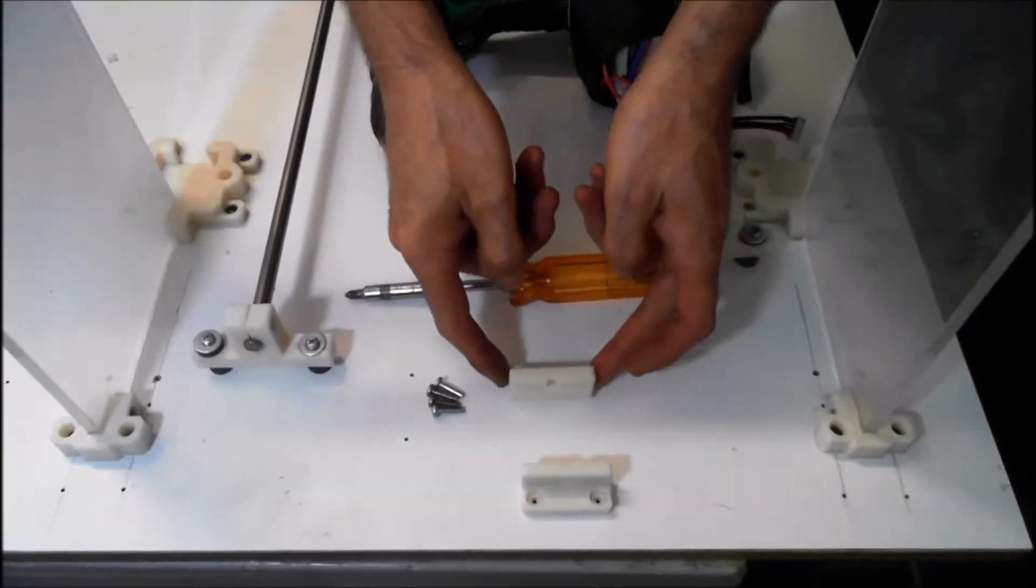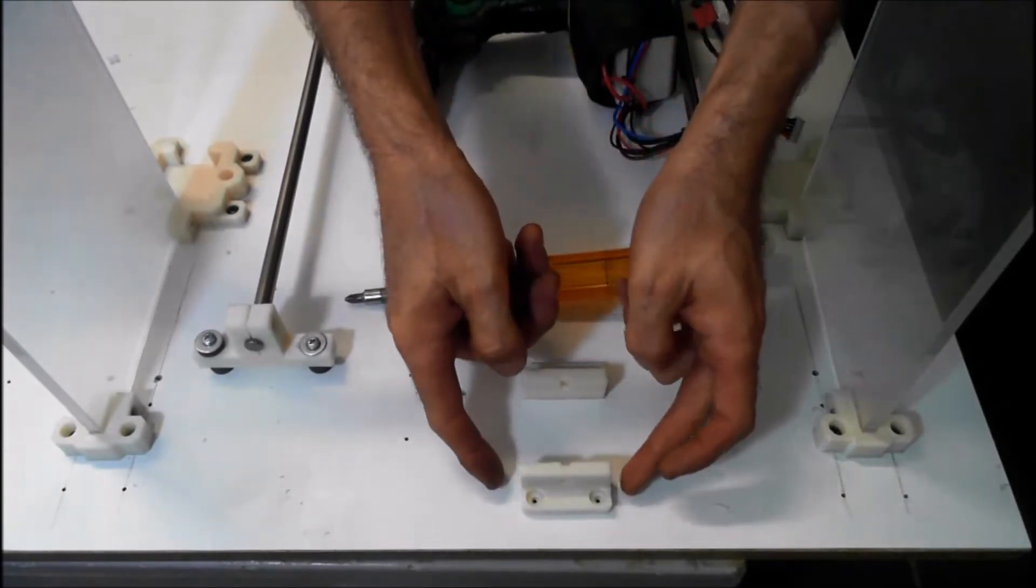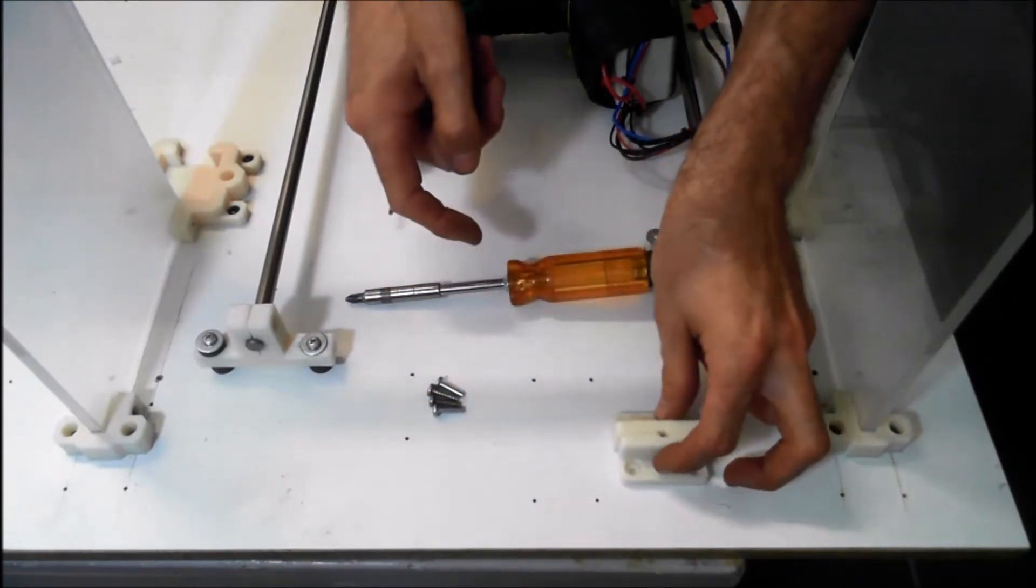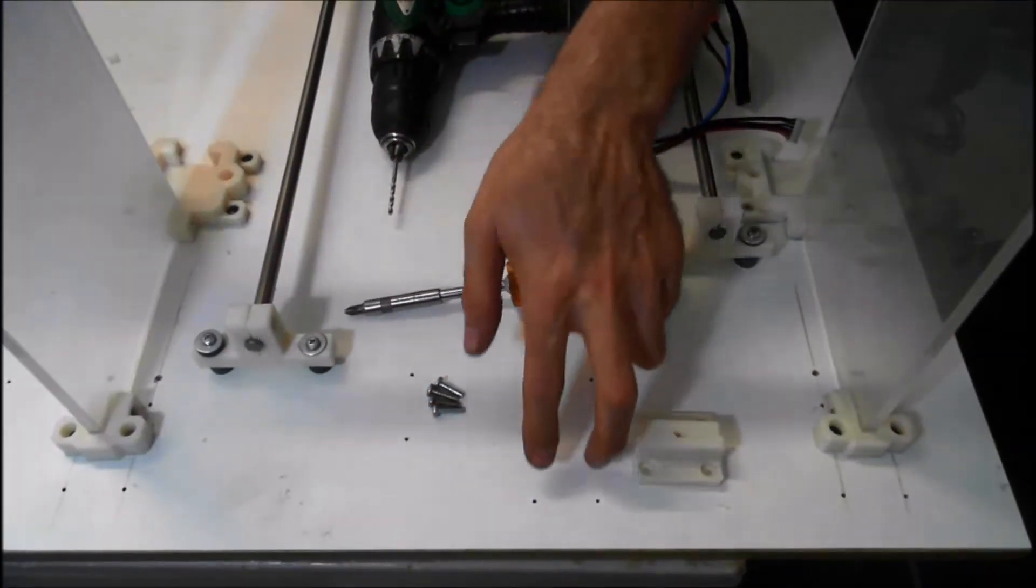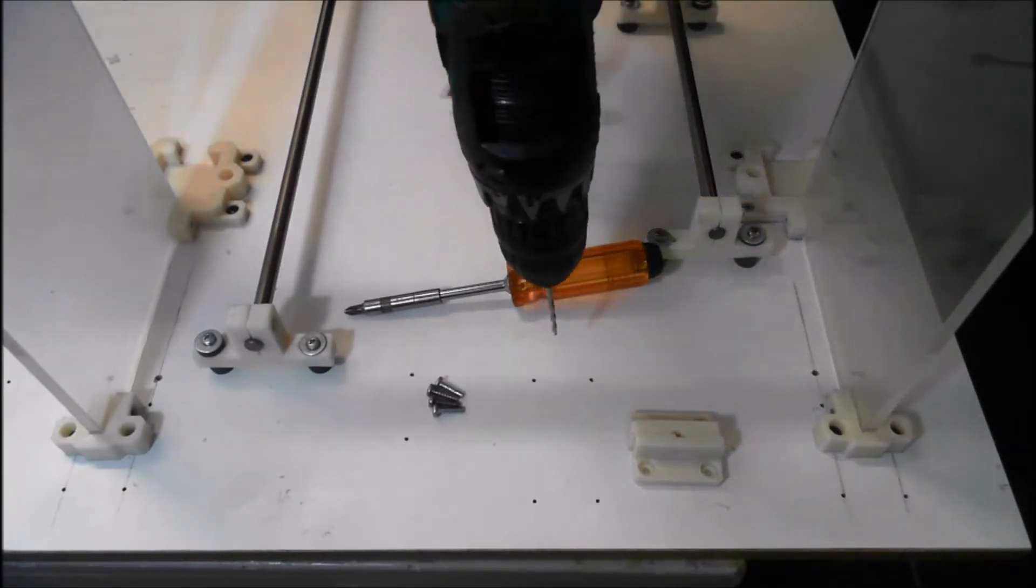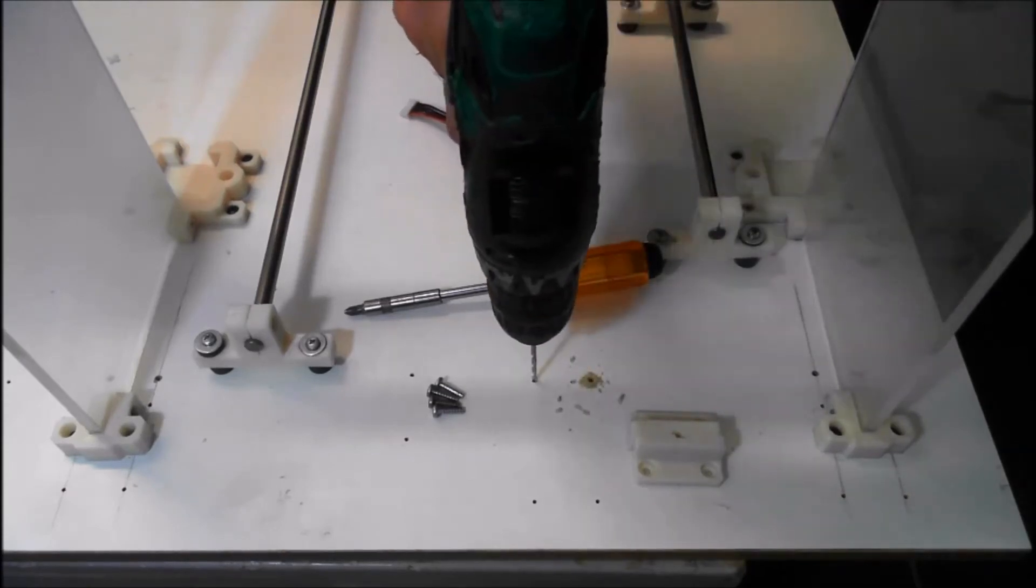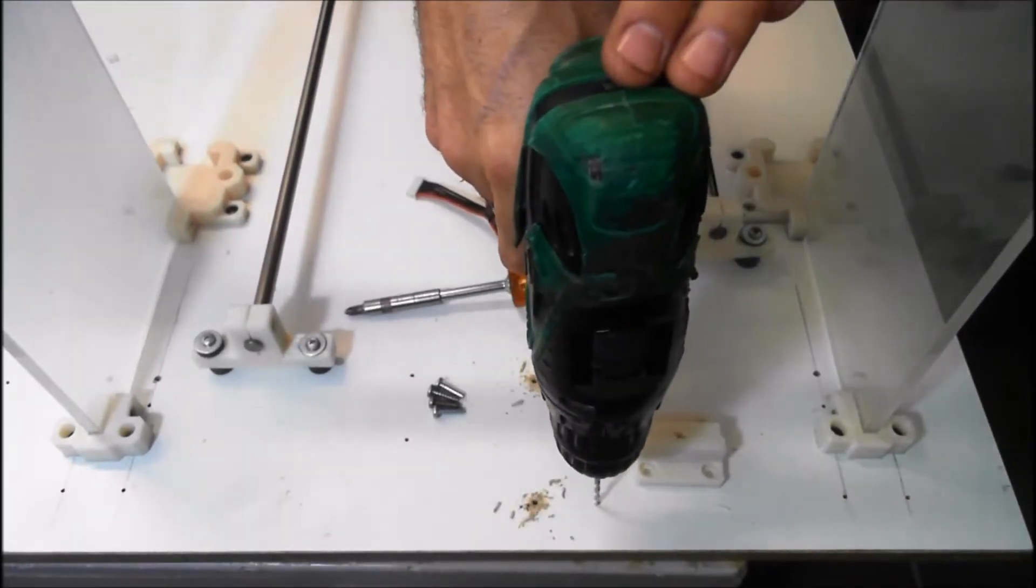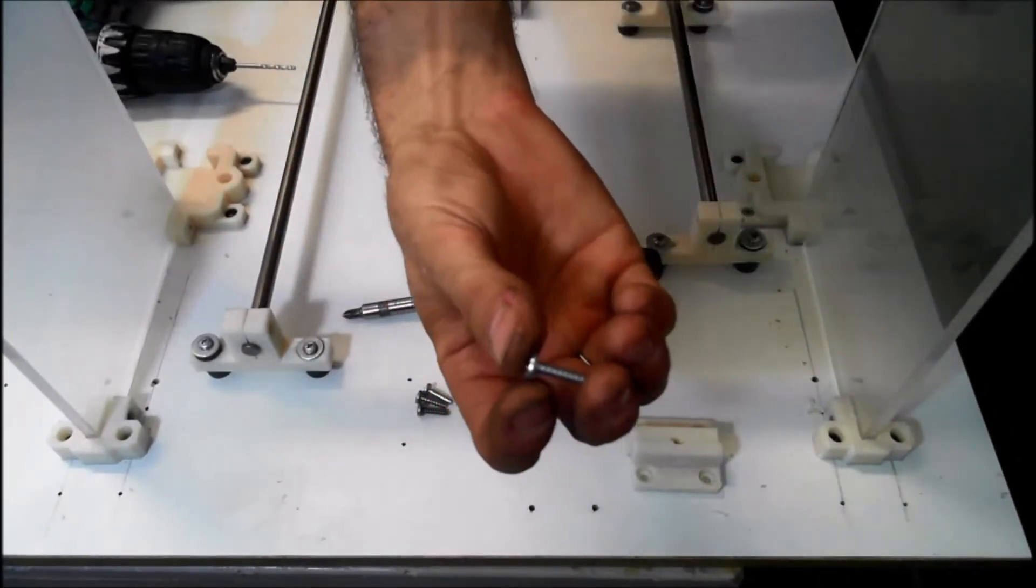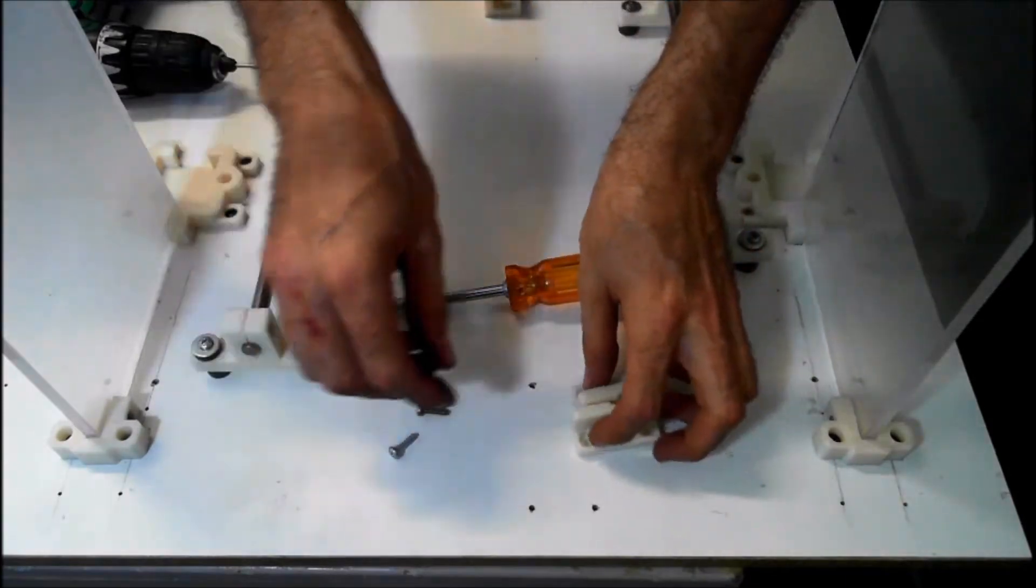Next we're going to mount the brackets to hold the y-axis motor. We've got the two little brackets ready and we're just going to use these four holes to secure it. We're going to drill them out again to 3mm and we'll just use probably about 15 millimeter M4 self-tappers.